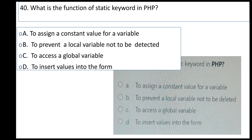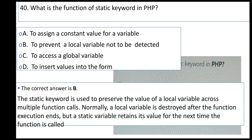The static keyword in PHP is used to preserve the value of local variables across multiple function calls. Normally, a local variable is destroyed after a function executes, but a static variable will retain its value the next time the function is called.